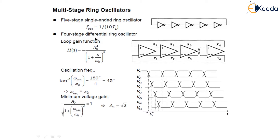For a four stage differential ring oscillator, we use the loop gain function where the open loop gain for a single stage equals A0 divided by (1 + S/ω0), and for four stages it will be A0 divided by (1 + S/ω0) to the power 4. The oscillation frequency is calculated using tan⁻¹(ω_osc / ω0) equals 180 degrees divided by 4, which equals 45 degrees, because we are using 4 stages and we want the total phase shift to equal 180 degrees. Solving for ω_osc gives ω_osc equal to ω0, because tan(45°) equals 1.